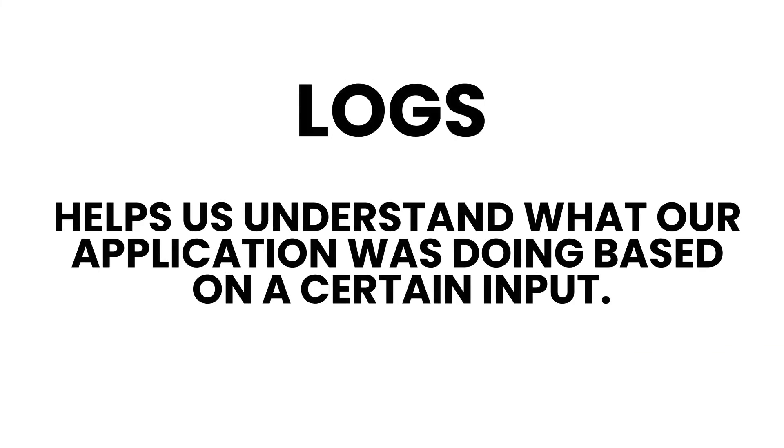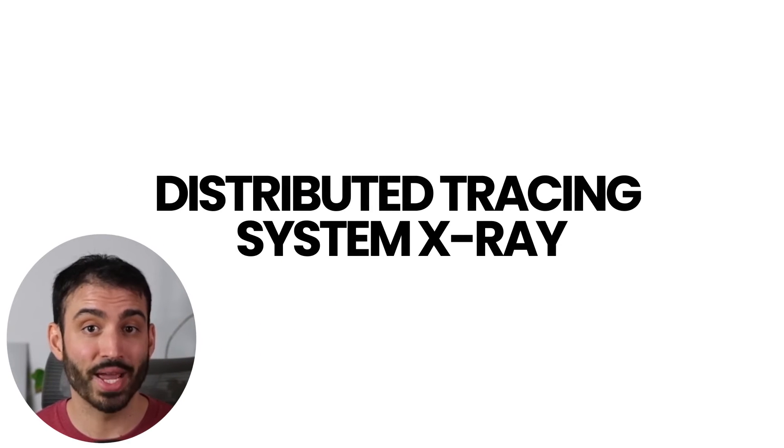Logs help us understand what our application was doing based on a certain input. This is critical information to help us identify unpredictable edge cases that may lead to bugs or unpredictable system behavior in general. If you haven't already, you'll want to add proper logging to your application. There are many common logging libraries out there that let you add logs at different visibility levels, such as trace, info, debug, error, and more. This allows you to quickly filter for different log levels to see all errors, for example. Depending on the language you use, the logging library may be different, so make sure you check which library is appropriate for your specific programming language.